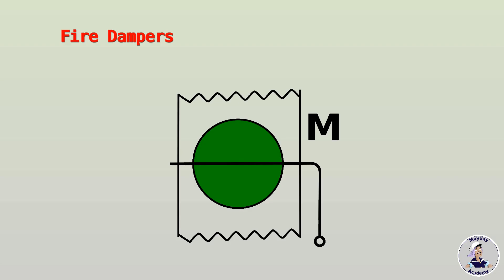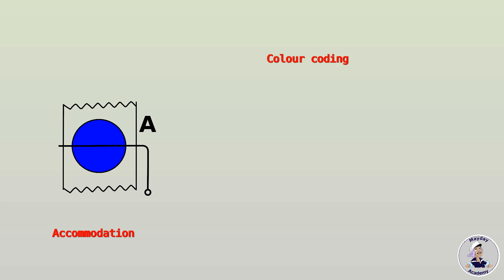These icons might also be used to label dampers and closing devices on-site. The icons for dampers and other closing devices are color-coded depending on the kind of space they serve. For accommodation spaces, we use a blue color and the letter A. Machinery spaces are indicated in green and cargo spaces in yellow.